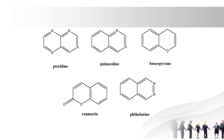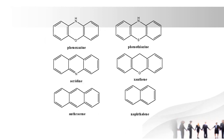Next one is quinolinone. It is the same as benzopyran except it contains a ketone functional group. Next one is xanthene. The drug fluorescein contains the xanthene ring.